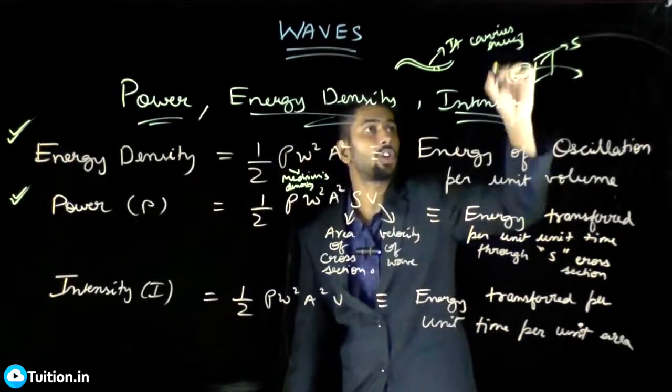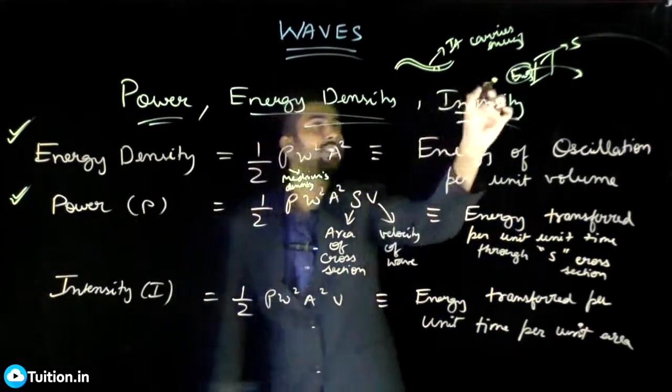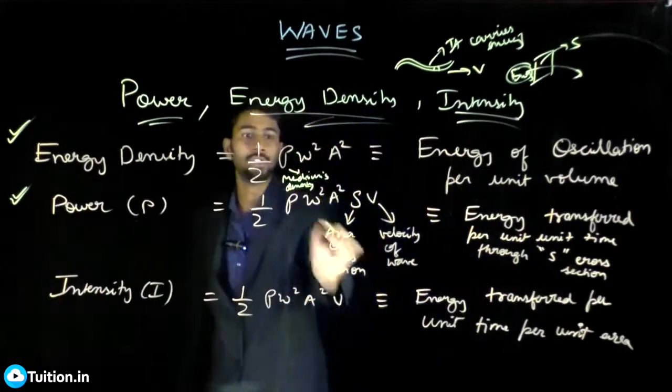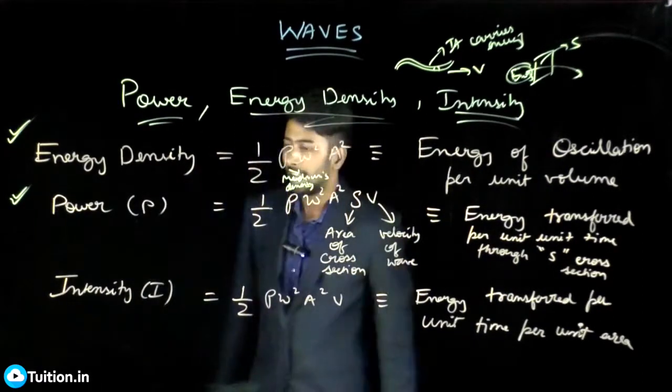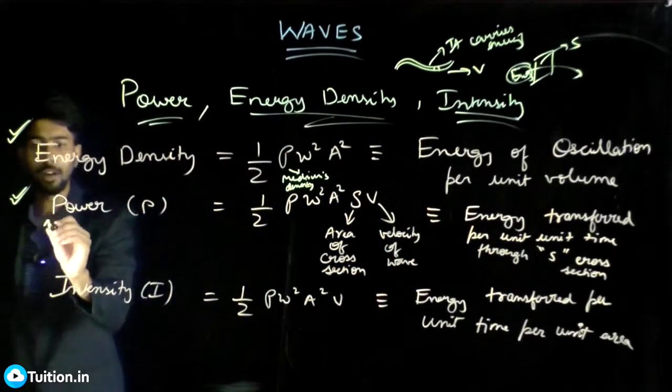S is the area of the cross section, and V is the velocity of this wave, like the velocity at which the wave is moving. This is what your power is. And then intensity. Remember this is average power.